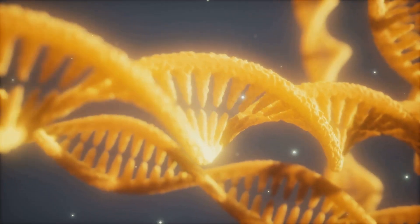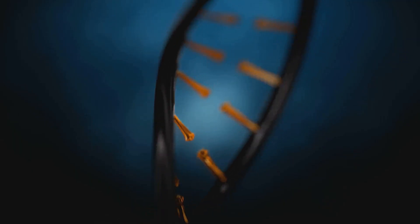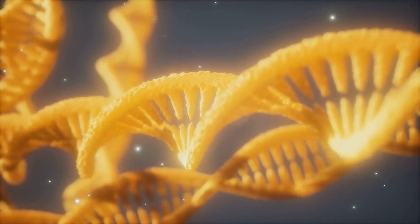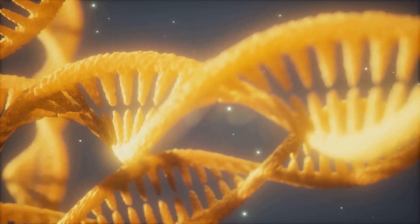The sugar phosphate backbones provide strength running anti-parallel to each other. The rungs are formed by pairs of chemical bases: adenine, thymine, cytosine and guanine.